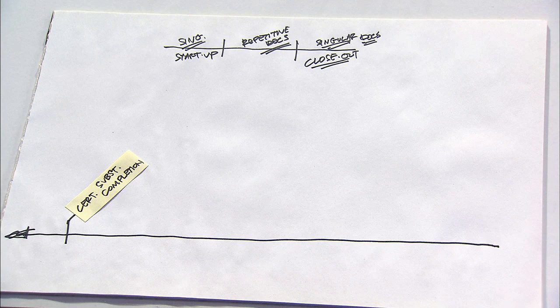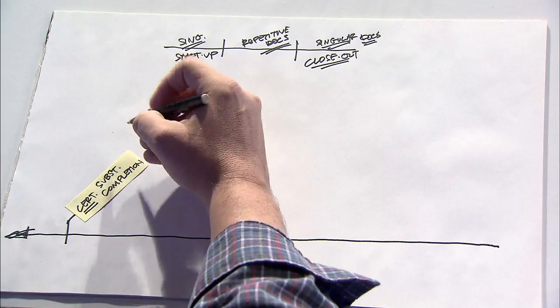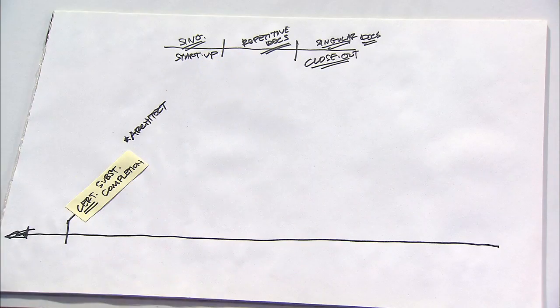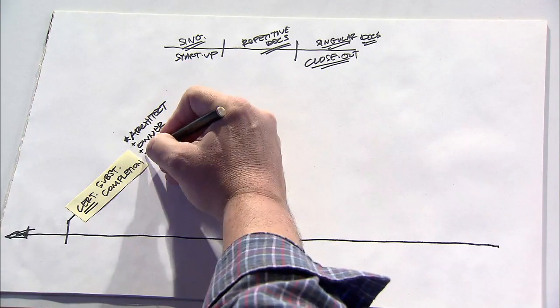Basically, none of the rest of the closeout components will occur until this certificate has been issued. And for vertical construction, this certificate is issued by the architect, although in most cases it also requires the owner to acknowledge that completion.